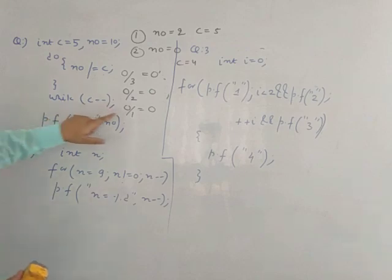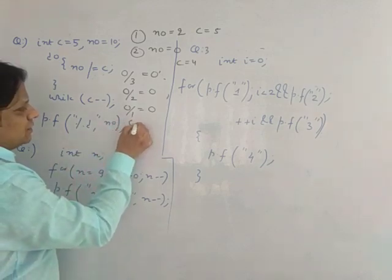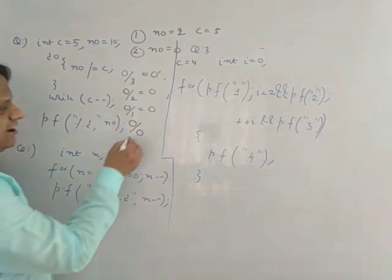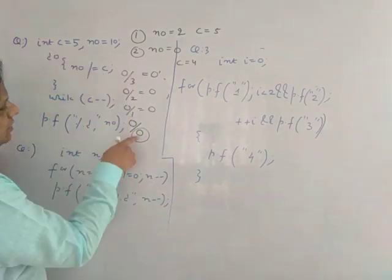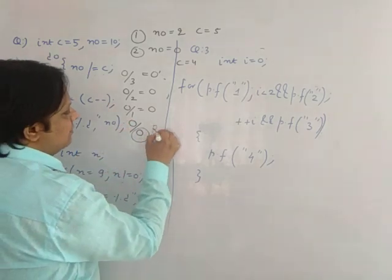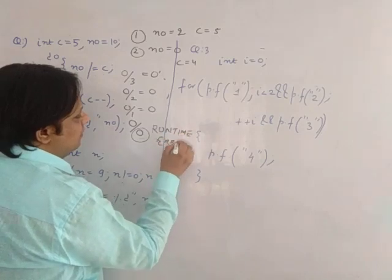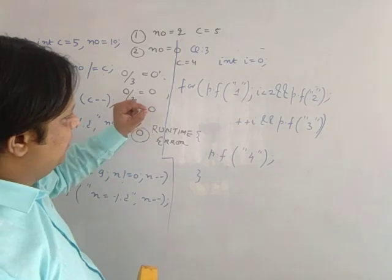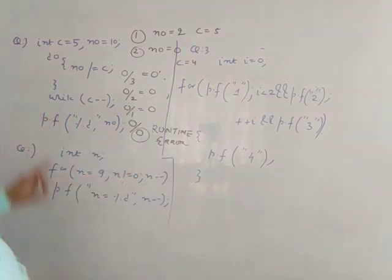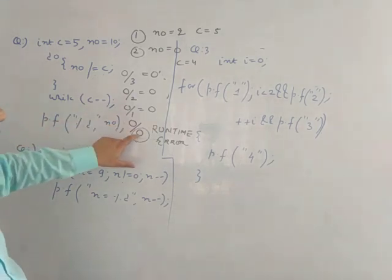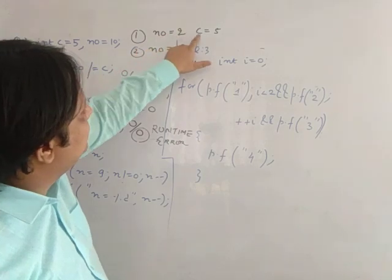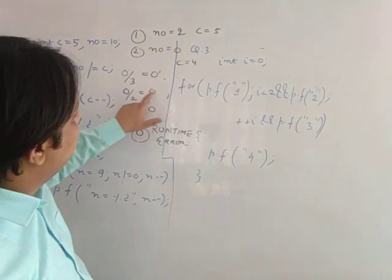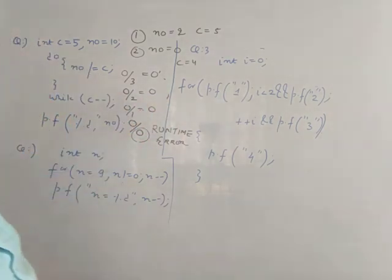Now the value of c is 1. When the loop runs again the value of c becomes 0. So now it is 0 divided by 0. When you divide a number by 0, it is a divide-by-zero exception — a runtime error. The value of c at one point becomes 0 and you are dividing by 0, so it is a runtime error.